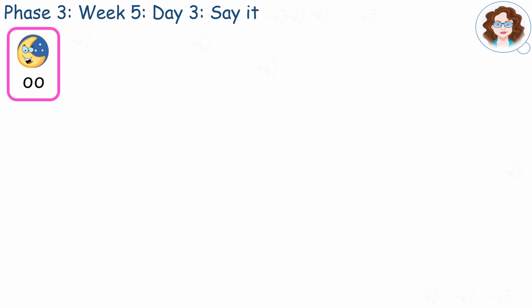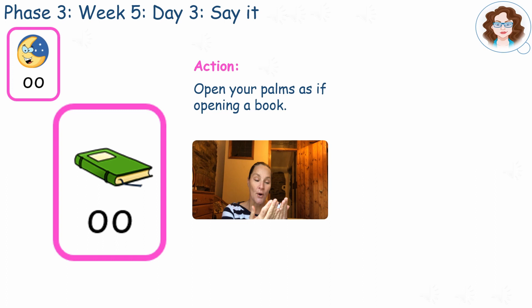We've already learnt that this grapheme makes the OO sound, but sometimes graphemes can make other sounds too. Let's listen to the alternative sound this digraph can make when reading and watch the action we can use to remember it by.